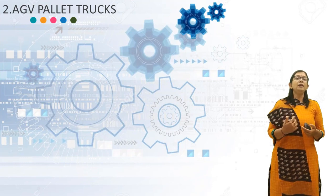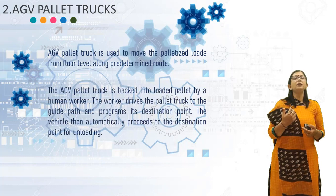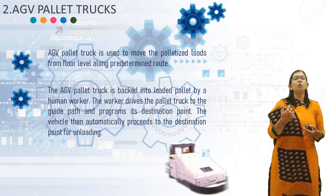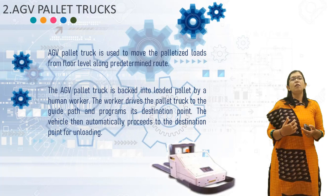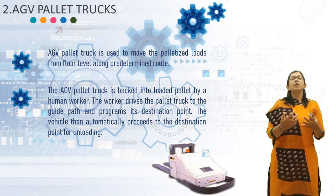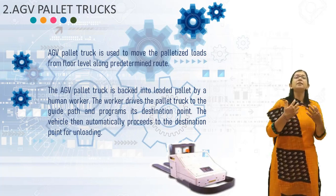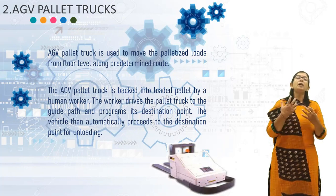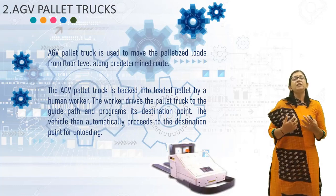The second type is AGV Pallet Truck. The AGV Pallet Truck is used to move palletized loads from floor level along a predetermined route, as shown in the diagram. The AGV Pallet Truck is backed into a loaded pallet by a human worker. The worker drives the pallet truck to the guide path and programs its destination point. The vehicle then automatically proceeds to the destination point for unloading. The capacity of the AGV Pallet Truck ranges up to several tons.